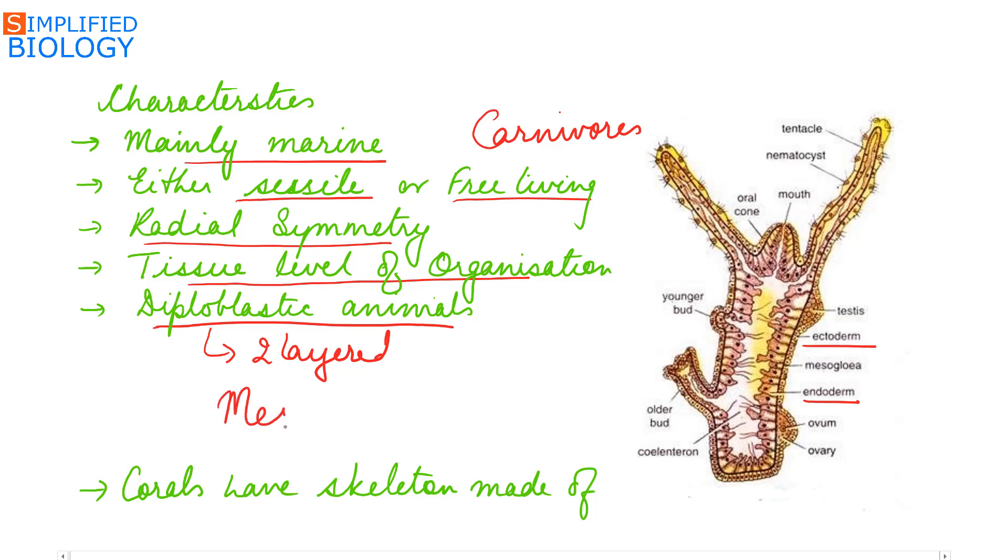Present between the two layers, that is ectoderm and endoderm, is a gelatinous layer known as mesoglia.